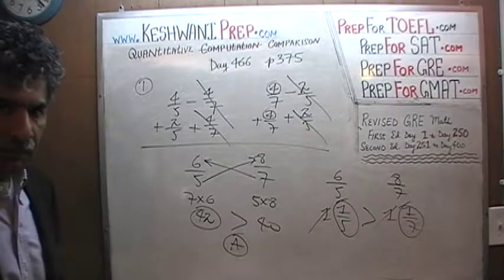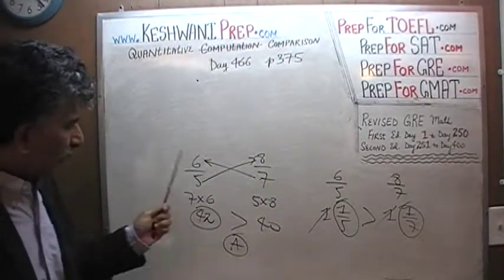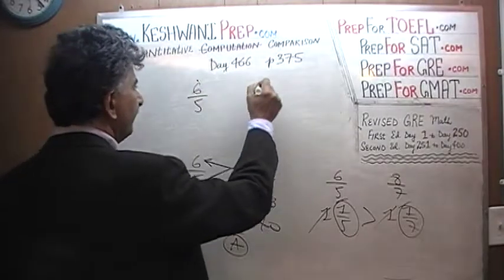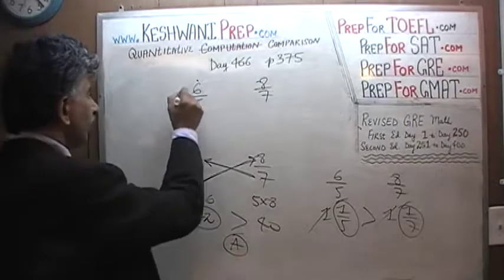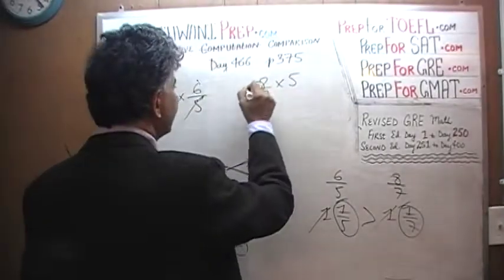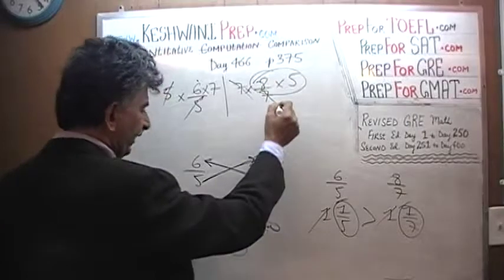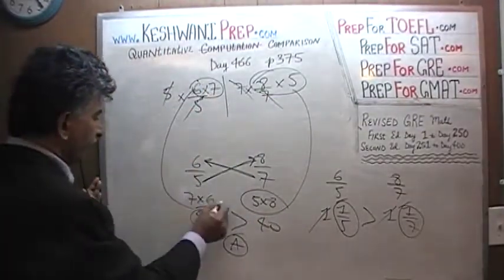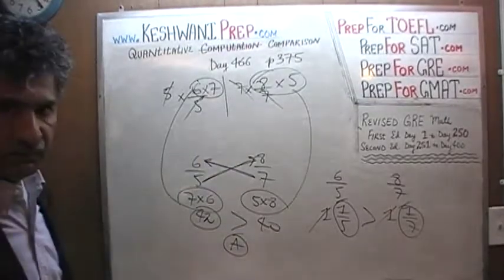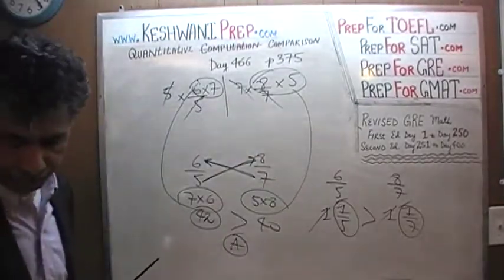I want to make sure you understand why this technique works — the theory behind cross-multiplying. Here's what's going on: with 6/5 versus 8/7, we are essentially multiplying both columns by 5 to eliminate the 5, then multiplying both columns by 7 to eliminate the 7. We end up with 8 times 5 versus 6 times 7 — that is what's going on behind the curtain. To save a few seconds we just cross-multiply, but this is what we're doing behind the scenes.